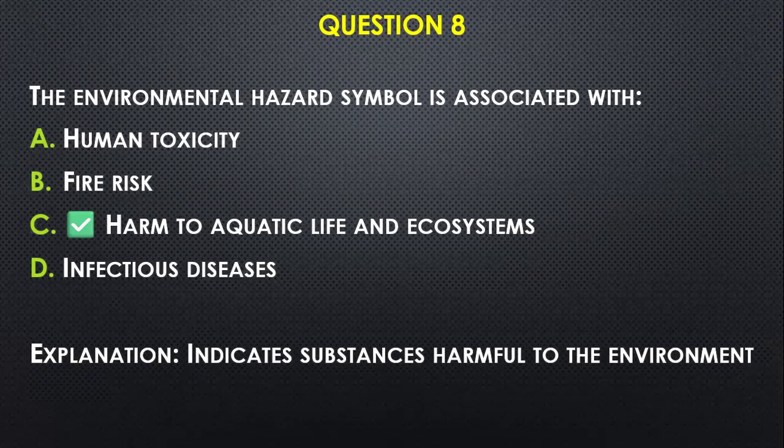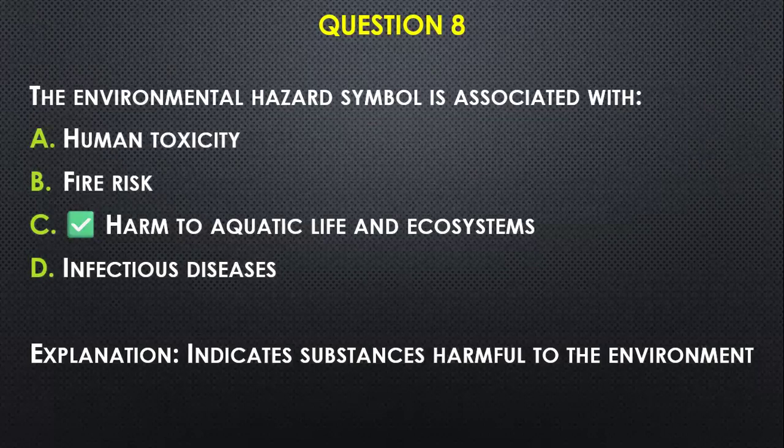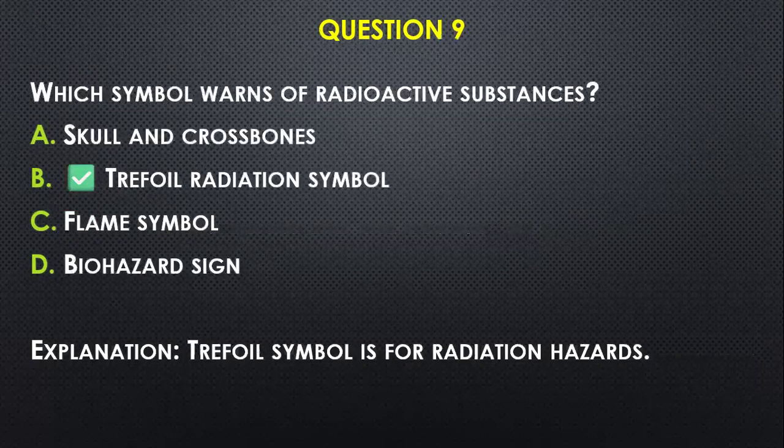Question number eight: The environmental hazard symbol warns about — A) fire risk, B) radiation, C) harm to aquatic life and ecosystems, D) infectious diseases. C is our answer, because environment is a giveaway — it has to do with harm to aquatic life and ecosystems found in the environment.